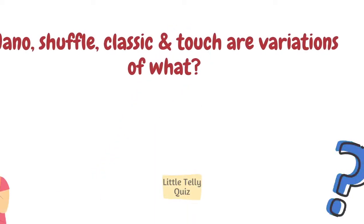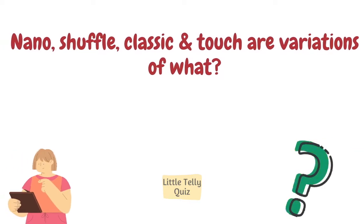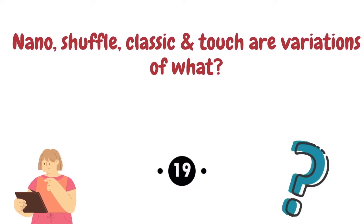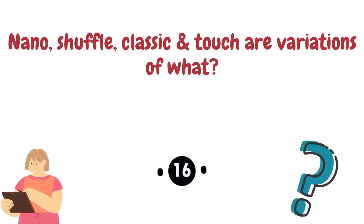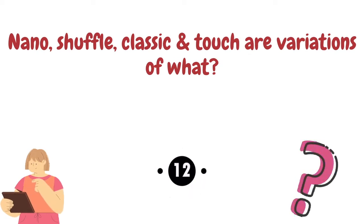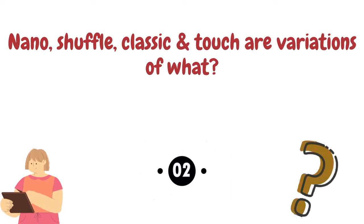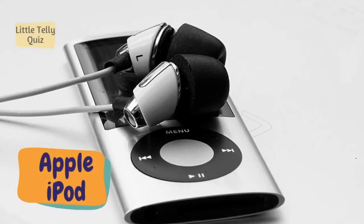Nano, Shuffle, Classic, and Touch are variations of what? The answer is the Apple iPod.